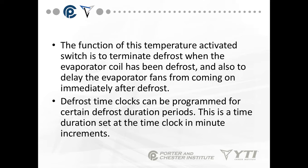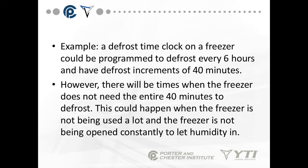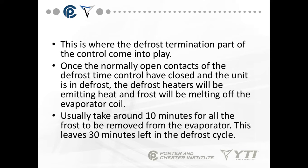Defrost time clocks can be programmed for certain defrost duration periods — a time duration set at the time clock in minute intervals. For example, a defrost time clock on a freezer can be programmed to defrost every 6 hours with defrost increments of 40 minutes. However, there are times when the freezer does not need the entire 40 minutes to defrost — such as overnight when the door is not being opened as frequently or when the freezer is not being used a lot. This is where the defrost termination part of the control comes into play.